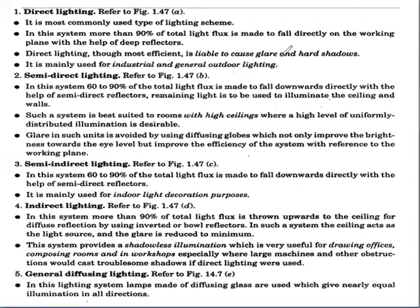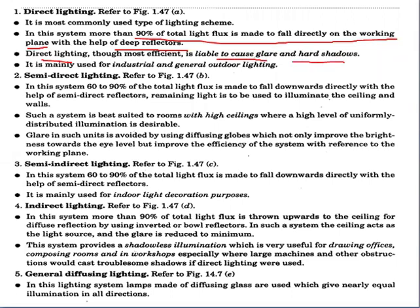Direct lighting is the most commonly used type of lighting scheme. In this system, more than 90% of the total light flux is directed downward onto the working plane with the help of deep reflectors. Although direct lighting is most efficient, it is liable to cause glare and hard shadows. It is mainly used for industrial and general outdoor lighting.